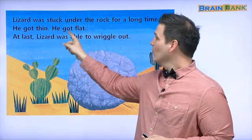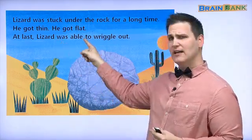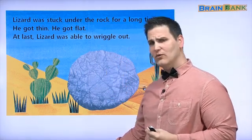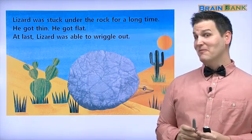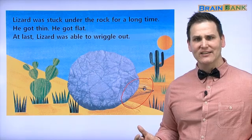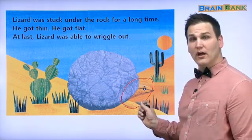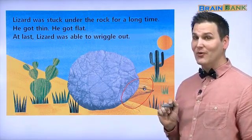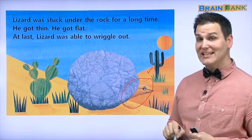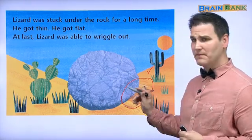Lizard was stuck under the rock for a long time. He got thin, he got flat. At last, lizard was able to wiggle out. Now do you see lizard? Here he is — he's kind of hiding. He doesn't have all of his colors; he's not green anymore. What color is he? He's yellow. What else is yellow in this picture? The sand is yellow, so the lizard can now hide very easily.